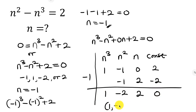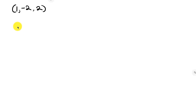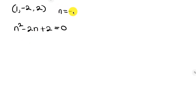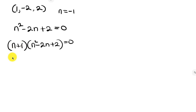The numbers at the bottom — 1, -2, and 2 — are the coefficients of the remaining equation. Since we started with n cubed, this new equation starts with n squared: n squared minus 2n plus 2 = 0. The full factorization is (n + 1)(n squared minus 2n plus 2) = 0. We already have n = -1; now let's solve n squared minus 2n plus 2 = 0 using the quadratic formula.